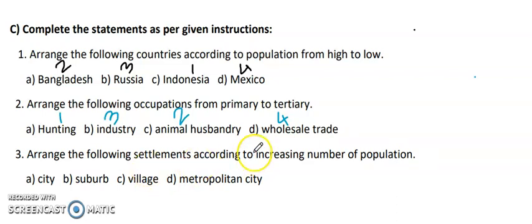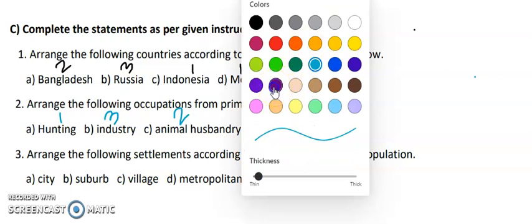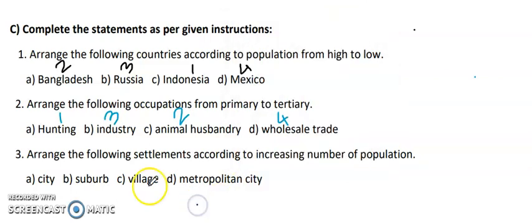First is village. The least population is in village. Then is your suburb. So suburb will be second. Suburb is linking village and city. It's not as developed as the city, so it also has less population.